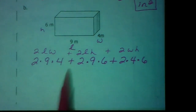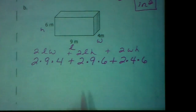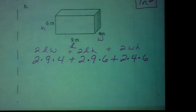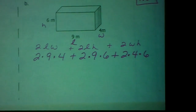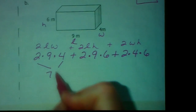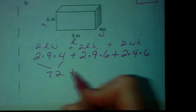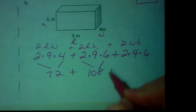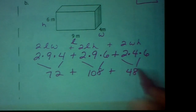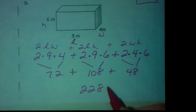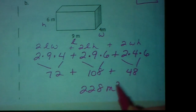Plug in all those numbers. You could type this all into your calculator — double check before you press enter that you typed everything in right. When I calculate this, that gives me 72, 108, and 48. Add them all up, and you get 228 meters squared, because we're dealing with area.